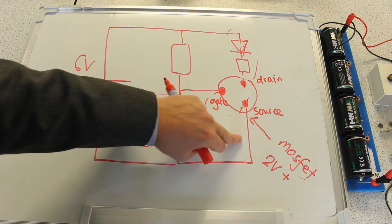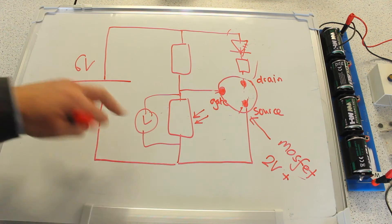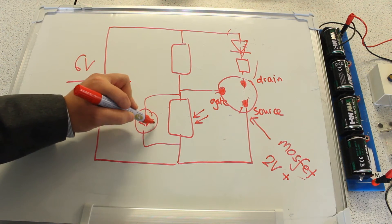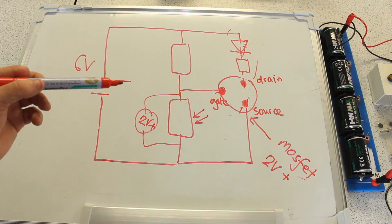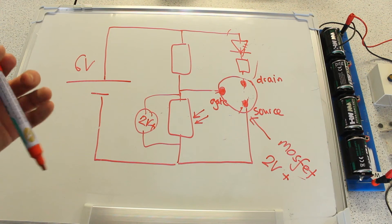Hence, if we change the conditions in our circuit, such that the voltage over the LDR is two volts or more, the voltage between the gate and the source will be two volts or more as well, and the LED will light up.